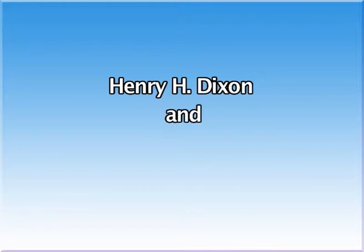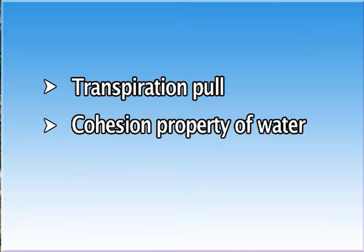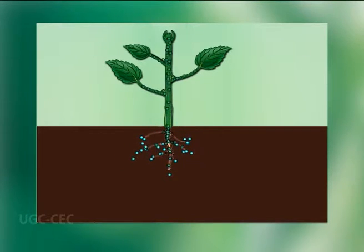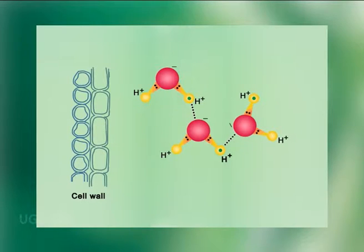The cohesion-tension theory is also called the suction force theory or transpiration pull theory. It was originally proposed by Henry H. Dixon and John Joly in 1894 and was supported by many workers. Transpiration pull or tension, the cohesion property of water, and hydration of the cell walls are three basic factors responsible for the ascent of sap. The pressure difference or tension created throughout the water column as a result of transpiration results in bulk flow of water through the xylem. The breaking of the water column is prevented by the cohesive property between adjacent water molecules and adhesion between water molecules and the cell walls.